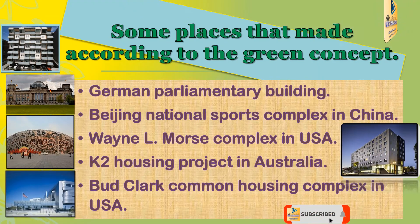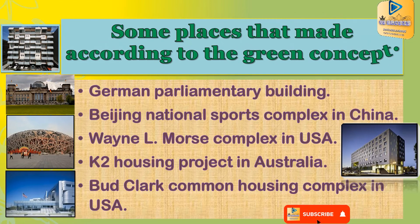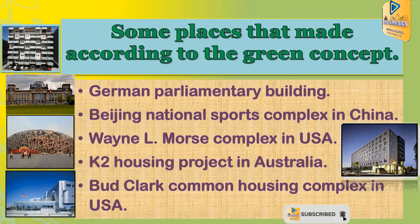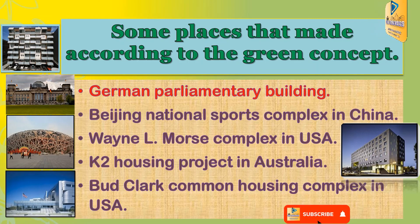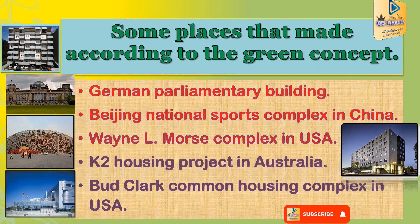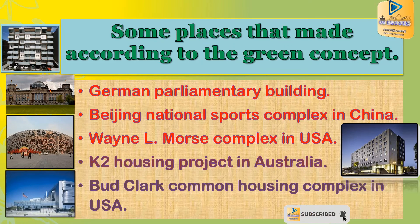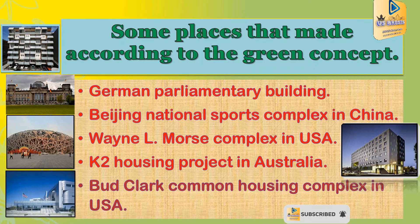Some places built according to the Green Concept are: the German Parliamentary Building, the Beijing National Esports Complex in China, the Wine and Elmos Complex in the US, the K2 Housing Project in Australia, and Bud's Class Common Housing Complex in the US.